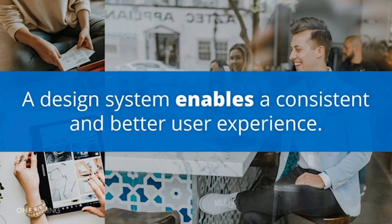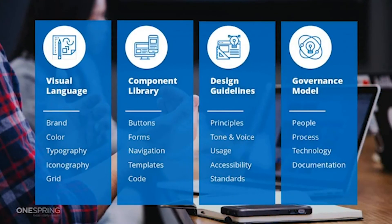What does a design system consist of? Typically it will include your visual language, component library, design guidelines, and governance model. A lot of folks have worked with brand standards guides, UI kits, or style guides — a design system is essentially an evolution of all of those things, but much more.